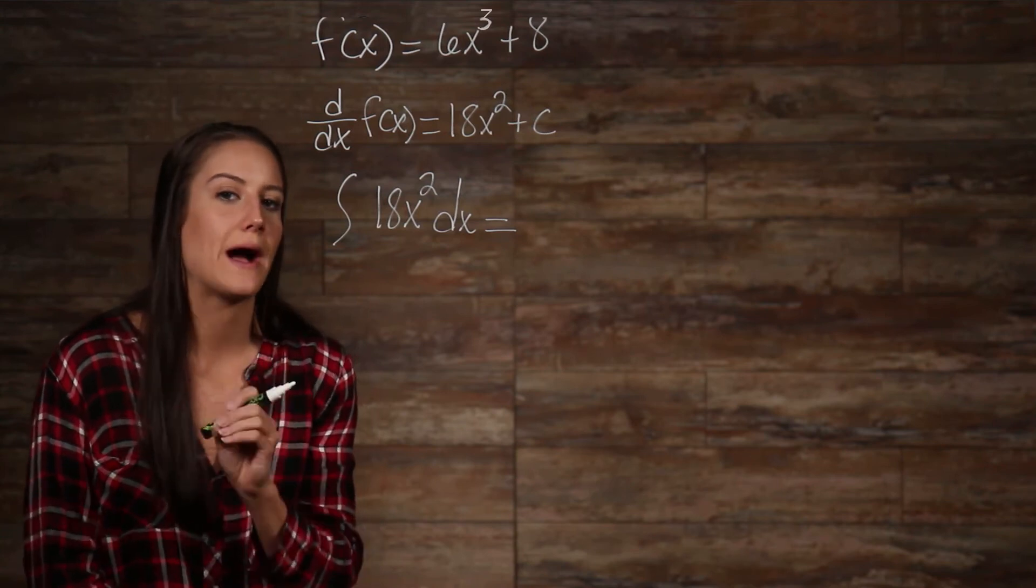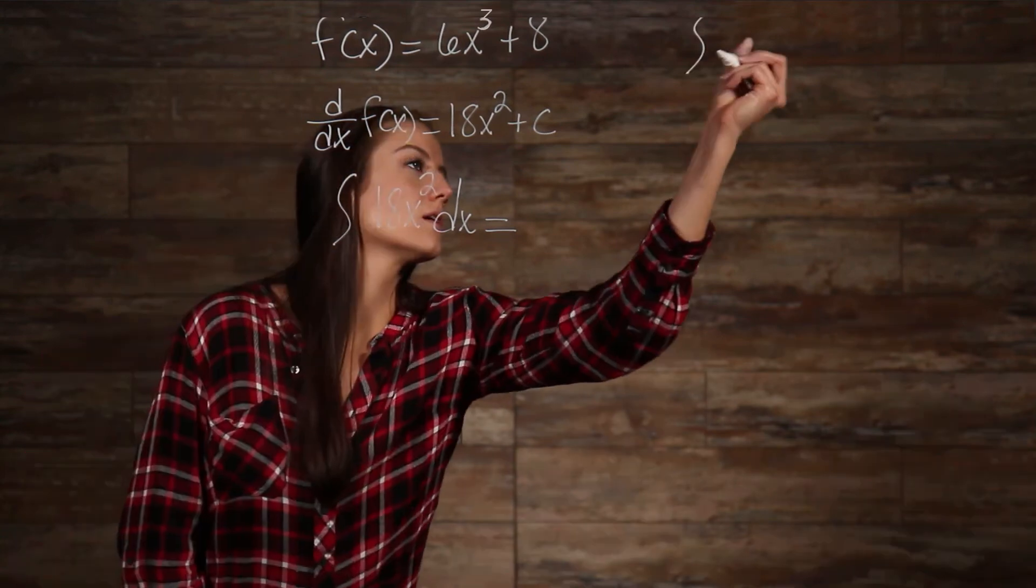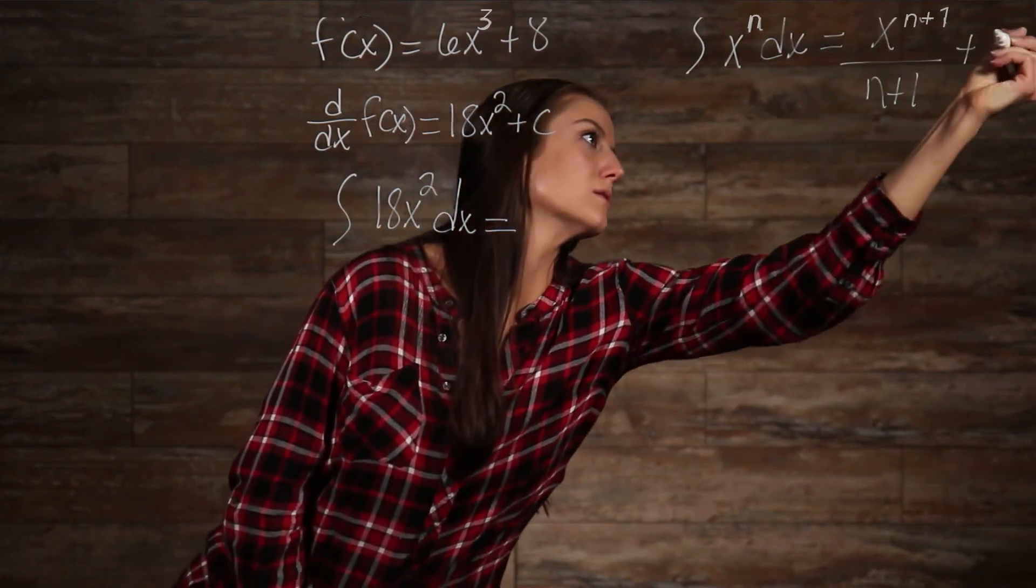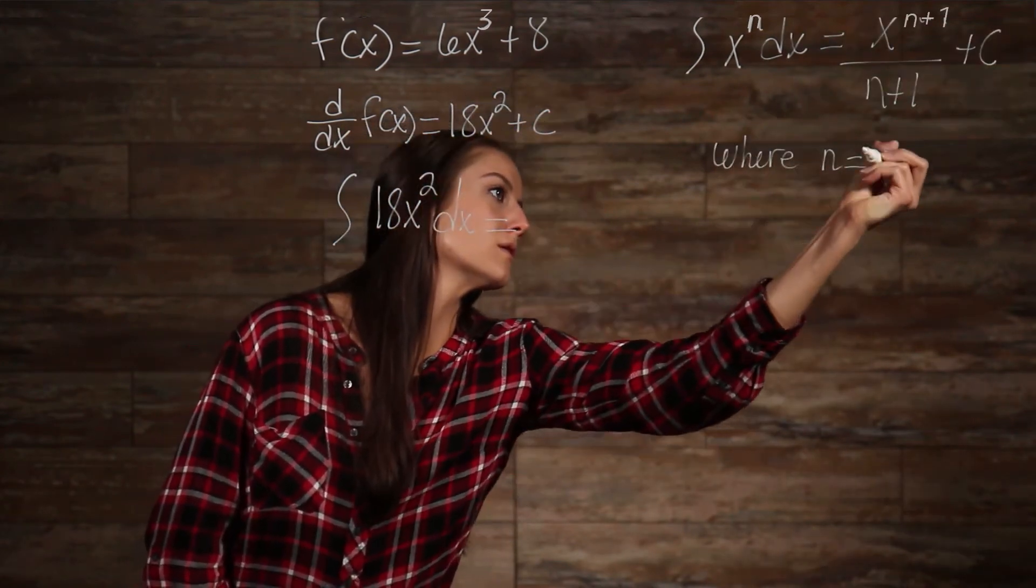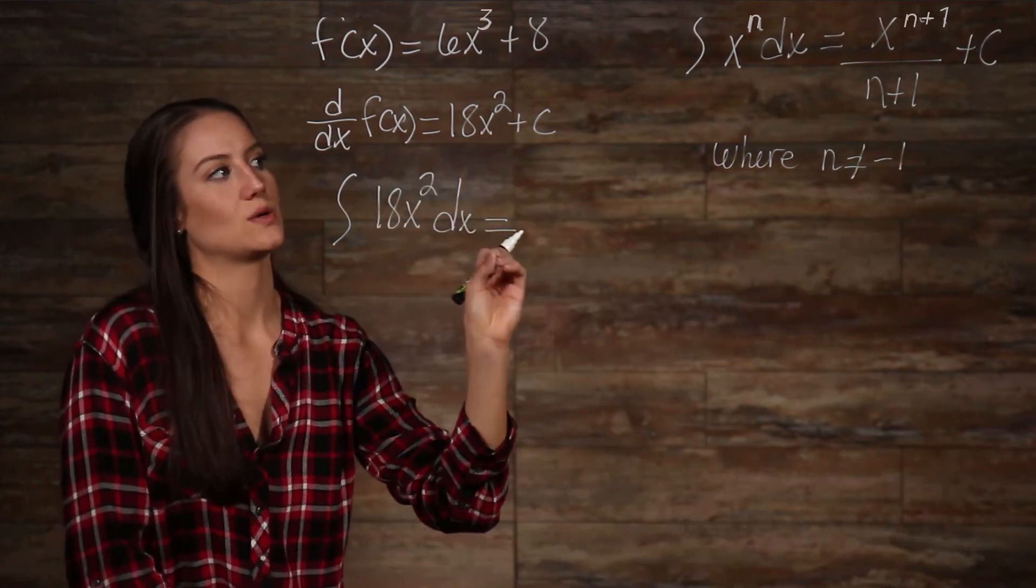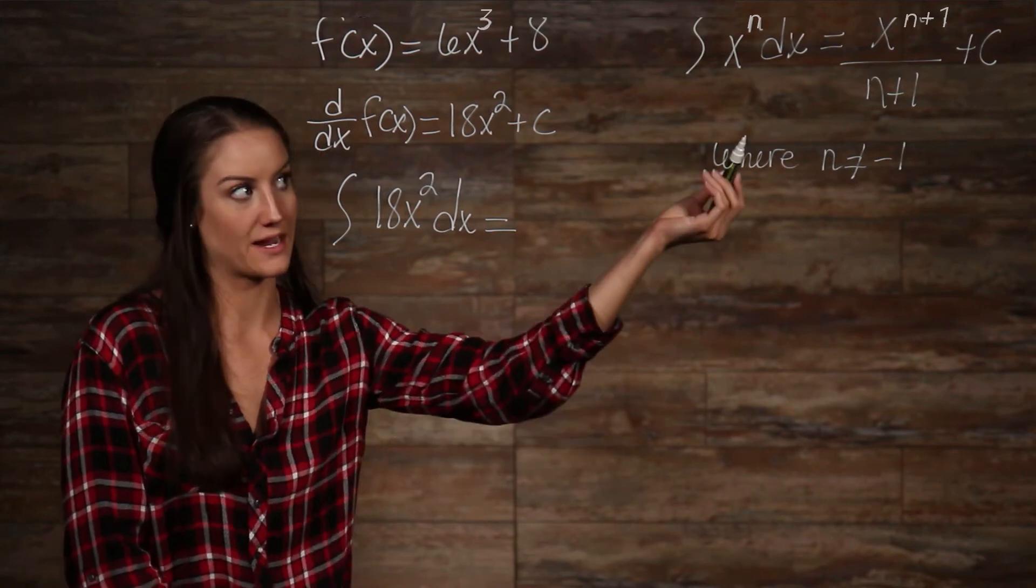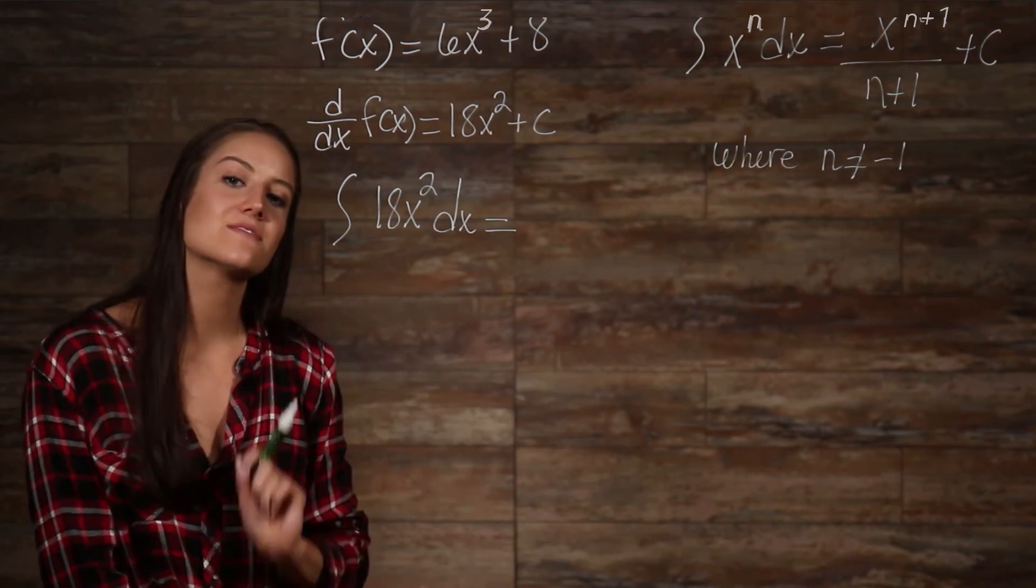The integral of the power of x is... What this is telling us to do is add 1 to our exponent, and then divide by our exponent plus 1, and always adding our plus c at the end. Let's see if this works.